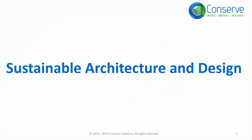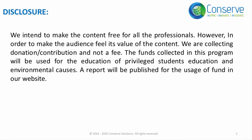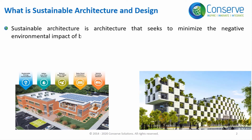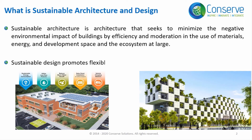The next category is Sustainable Architecture and Design. Sustainable architecture seeks to minimize the negative environmental impacts of buildings by efficiency and moderation in the use of materials, energy, development space, and the ecosystem at large. Sustainable design promotes flexible design that can support future building occupancy.